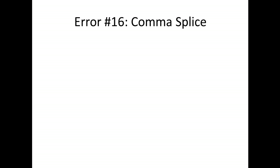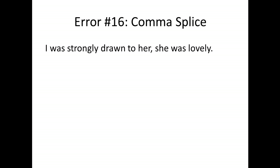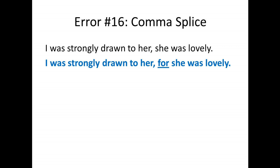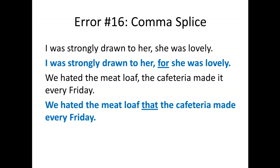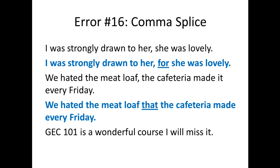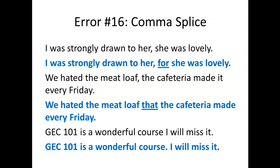Error sixteen is called a comma splice. 'I was strongly drawn to her, she was lovely' — this is like a run-on sentence, except there's a comma where there should not be one. It is still two complete sentences separated by a comma. It should be: 'I was strongly drawn to her, for she was lovely.' 'We hated the meatloaf, the cafeteria made it every Friday' should be 'We hated the meatloaf that the cafeteria made every Friday.' 'GEC 101 is a wonderful course, I will miss it' — these are two complete sentences, and putting a comma between them is incorrect.